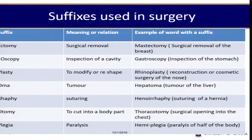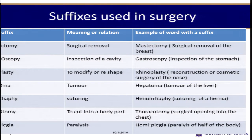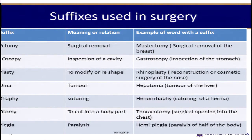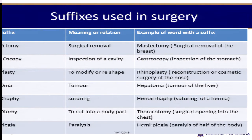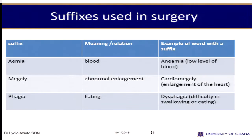Then we come to suffixes, also presented in tabular form. For example, '-ectomy' means surgical removal of something — the prefix comes before the stem while the suffix comes after. So mastectomy means removal of the breast. '-Oma' refers to tumor, so hepatoma — 'hepato' meaning liver — is a tumor of the liver. Please try to become familiar with some of these words and you will enjoy using them.